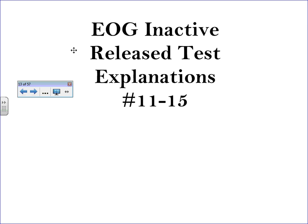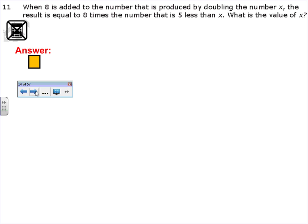This video is for the EOG inactive release test for explanations for problems 11 through 15. Number 11. When 8 is added to the number that is produced by doubling the number x, the result is equal to 8 times the number that is 5 less than x. What is the value of x?